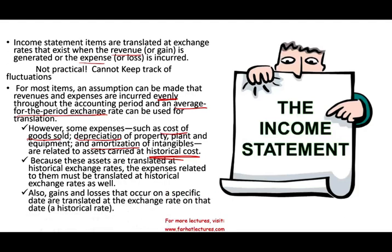We also have to be careful about gains and losses — those are peripheral and not common transactions. Those that occur on a specific date are translated at the exchange rate on that specific date. Going back to McDonald's: they sell burgers all day, but they might also sell an old warehouse or piece of land, incurring a gain or loss. Because that is a transaction that can be pinpointed to a specific date, we use the exchange rate on that date.